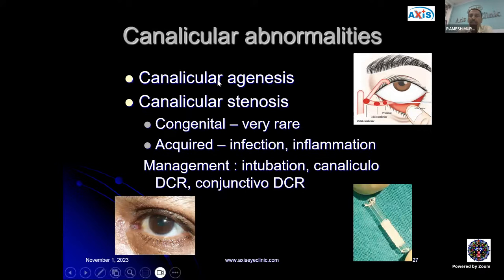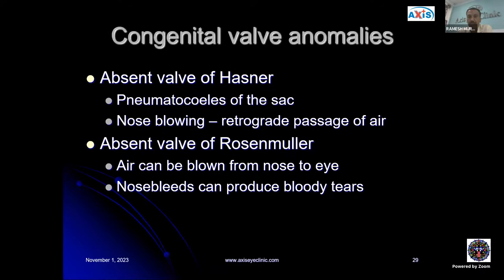In canalicular abnormalities, we have canalicular agenesis or stenosis. Congenital canalicular stenosis is very rare; it is usually acquired in nature and needs canalicular dilatation with a stent. There could also be congenital valve abnormalities — an absent valve of Hasner causing pneumatocele of the sac with retrograde air passage, or an absent valve of Rosenmuller allowing air to blow from nose to eye, causing bloody tears with nosebleeds.